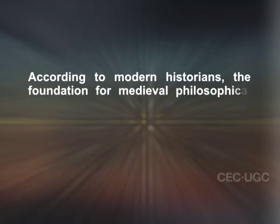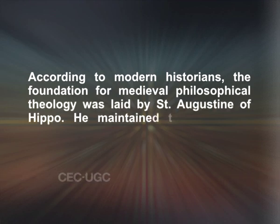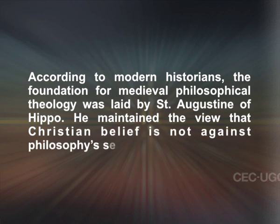But it should also be noted that Christianity imposed some external constraints on the philosophy of medieval times. Many such constraints were applied institutionally — texts were prohibited officially, philosophical positions were condemned by Christian institutions, and individuals were censored. According to modern historians, the foundation for medieval philosophical theology was laid by Saint Augustine of Hippo. He maintained the view that Christian belief is not against philosophy's search for truth. According to him, Christian belief acts as an important addition and support to philosophy.